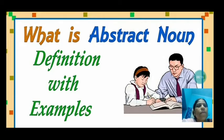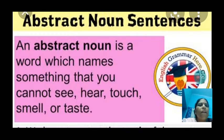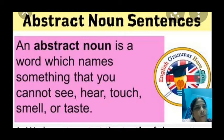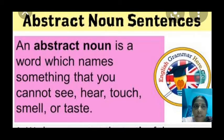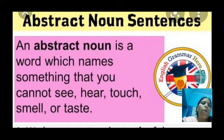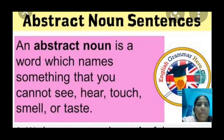So what is abstract noun? An abstract noun is a word which names something that you cannot see, hear, touch, smell or taste. Abstract noun talks about our feelings, qualities or ideas which we are not able to see, which we can't hear, which we can't touch, smell or taste. That means it doesn't have any kind of physical appearance — it doesn't have a body.